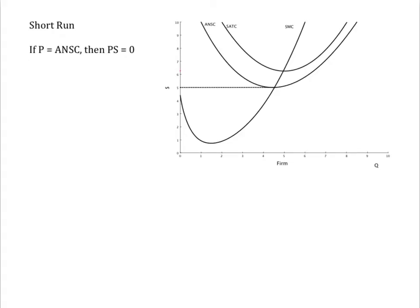But as price rises above this level, the firm gains a surplus between marginal revenue — price for a competitive firm — and marginal cost. When P equals the minimum point on the average cost curve, the break-even point where profits are just zero, producer surplus just covers the unavoidable, that is, sunk fixed cost.